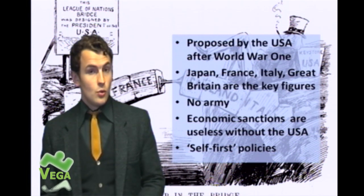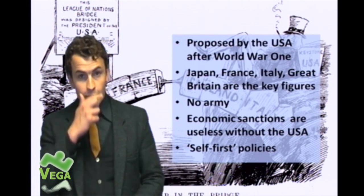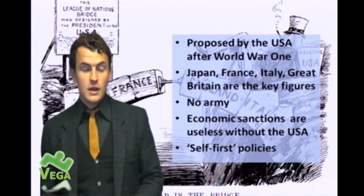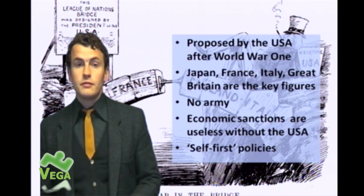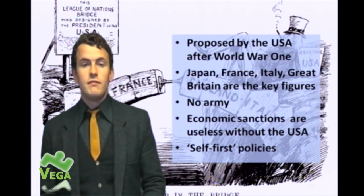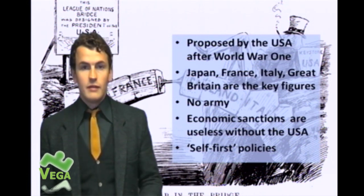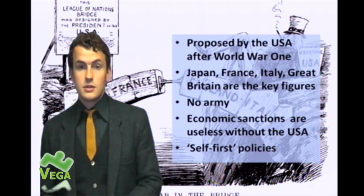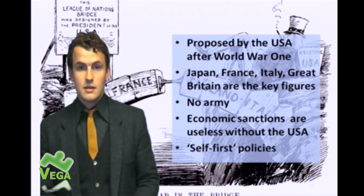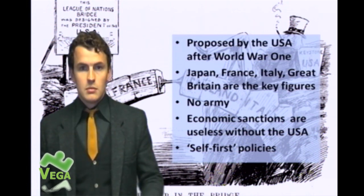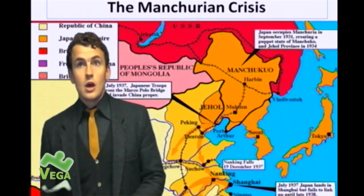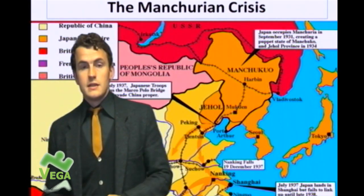Moreover, within the League of Nations you had those four countries — Japan, Italy, France, and Great Britain — who often acted in a self-first manner. They looked after themselves first, and only thereafter did they think about maintaining world peace. So, the Manchurian crisis.